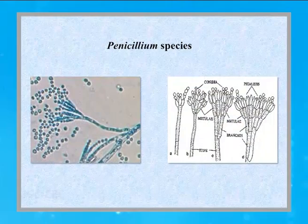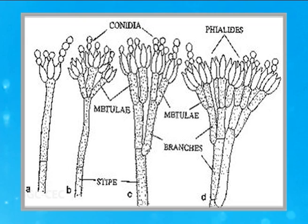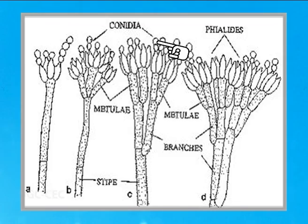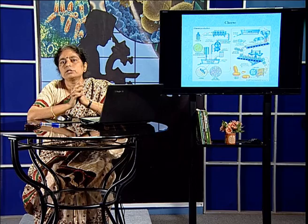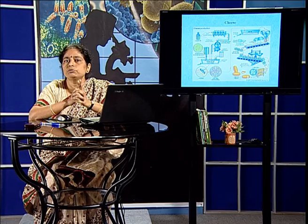Now let us go into the use of molds in the food industry. Molds are not only ones which contaminate our food — they can be exploited in the food industry for the manufacture of many food items. The first mold to discuss is penicillium. There are many species of penicillium, but the generalized structure resembles a broomstick, with phialides — swollen structures — at whose tips conidia or spores are present. The most important food product produced using penicillium is cheese.